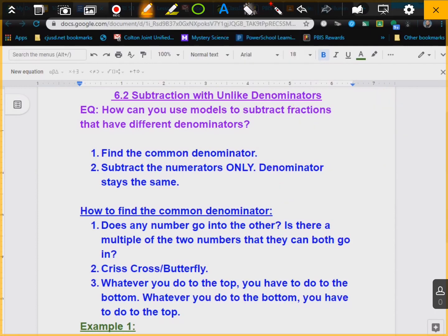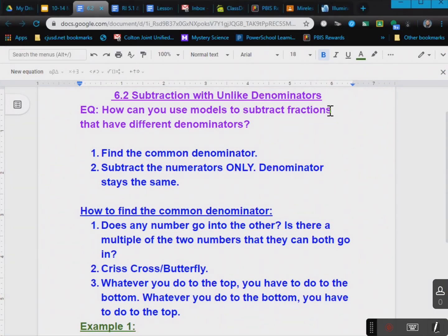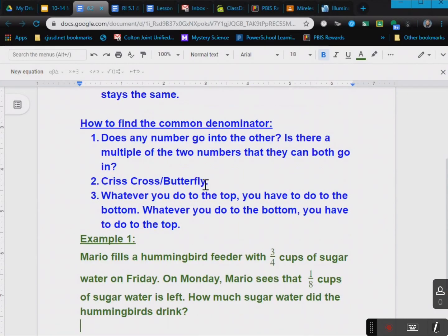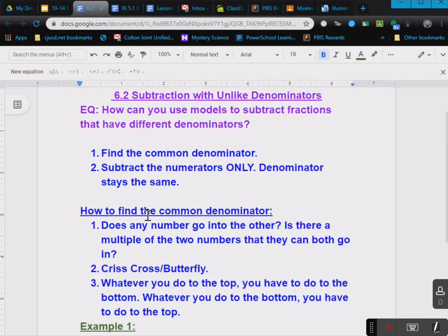So let's go ahead and talk about how to find the common denominator once again. It's the same as the other rules, so I would write it a second time though, just because it's always good to have. But does the number go into the other? Is there a multiple of the two numbers that they can both go in? And crisscross butterfly, which we've talked about in the previous video. Whatever you do at the top, you have to do at the bottom. Whatever you do at the bottom, you have to do at the top. Just remember those rules. If you need to pause and write that down, please go ahead and do so now.